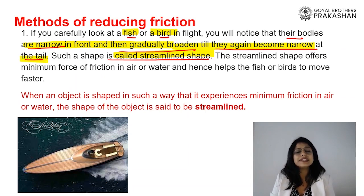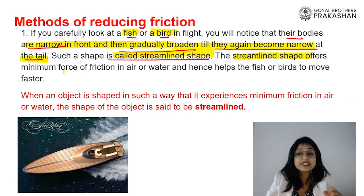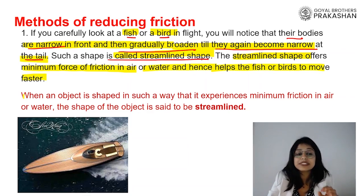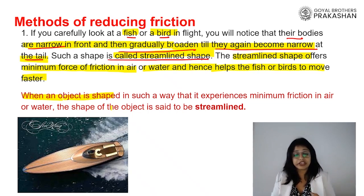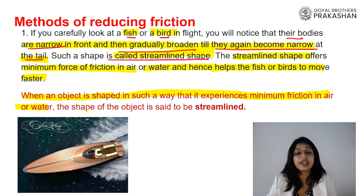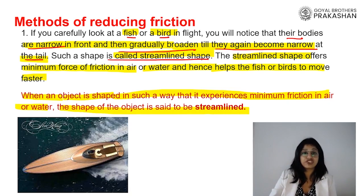This same streamlined shape is observed and put to use in making boats. The streamlined shape offers minimum force of friction in air or water, and hence helps fishes and birds to move faster. So we apply this same streamlined shape to objects moving in air and water — such as aeroplanes, ships, and submarines. They are made with a streamlined body to reduce friction in air and water.